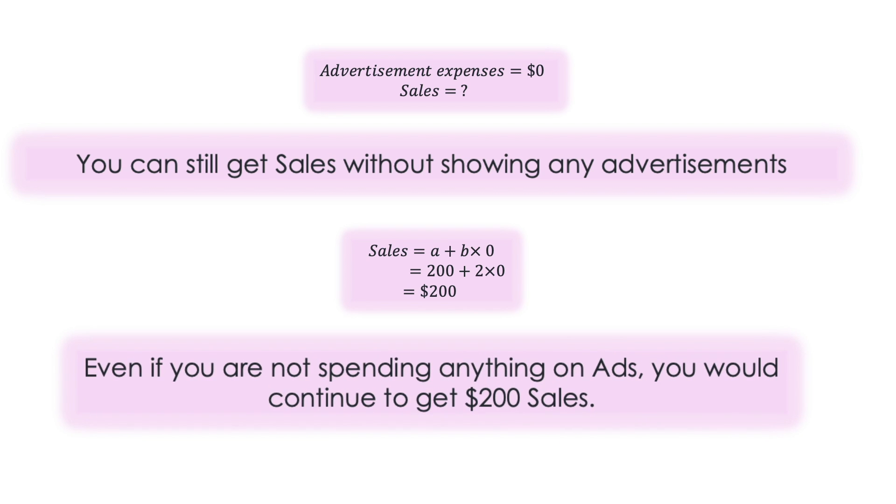So even if you are not spending anything on ads, you will still continue to get 200 sales. This 200 is called baseline, or for our case it would be baseline sales. It is also called the intercept, but that will be more clear when I show you how the linear regression plot looks like.